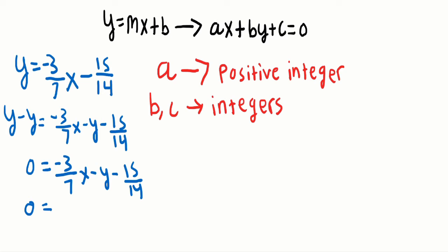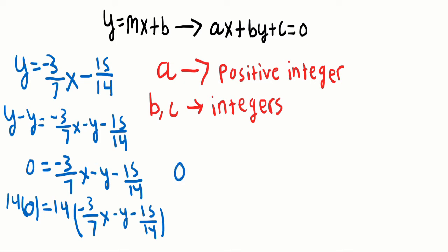Let's look at the denominators of our fractions: we have a denominator of 7 and a denominator of 14. The lowest common multiple of these two numbers is 14. So we multiply by 14 on both sides: 14 times 0 equals 14 times the quantity negative 3 over 7X minus Y minus 15 over 14. Distributing, 14 times negative 3 over 7 gives us negative 6X, and 14 times negative 15 over 14 — the 14s cancel — giving us negative 15.